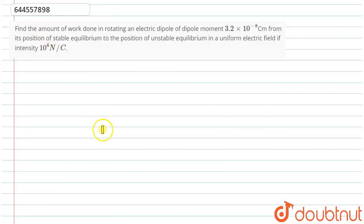Good morning students. What is our question? Find the amount of work done in rotating an electric dipole from its position of stable equilibrium to a position of unstable equilibrium in a uniform electric field with given intensity.